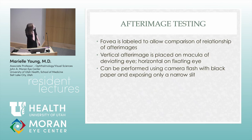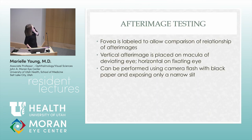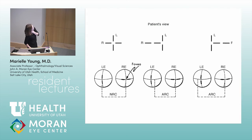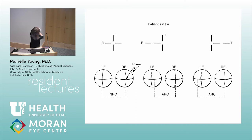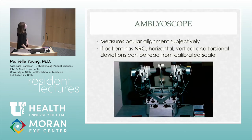Another similar test involves labeling the fovea with a flash of light and looking at afterimages. If they have normal retinal correspondence, they'll see the afterimages together. If they have anomalous retinal correspondence, they'll see them as a T or a backwards — flipped — T.